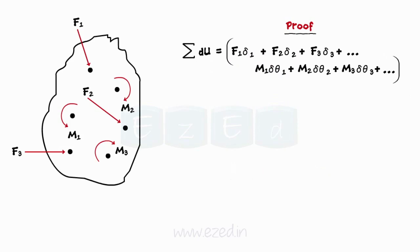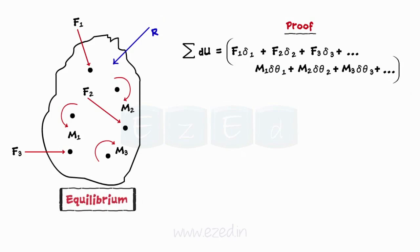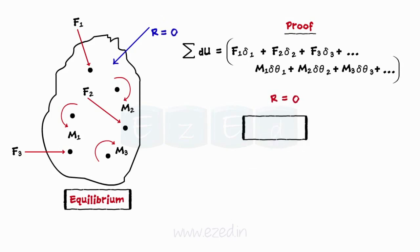The system of these forces will have some resultant R. Hence, the body will have some displacement δ. But if the system is in a state of equilibrium, then R is equal to zero. Therefore, the total virtual work done is equal to zero. Thus, we have proved the principle of virtual work.